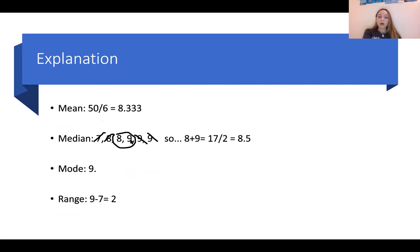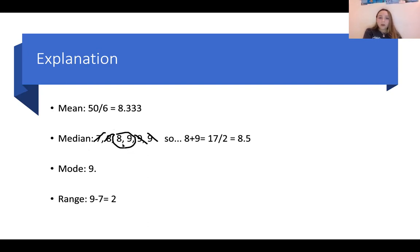I've already arranged the numbers in least-to-greatest form: 7, 8, 8, 9, 9, 9. Crossing out from the first to last value and moving inward, 8 and 9 were the two middle numbers. When you have two numbers in the middle, add them and divide by 2. So 8 plus 9 equals 17, divide by 2 — our median is 8.5.